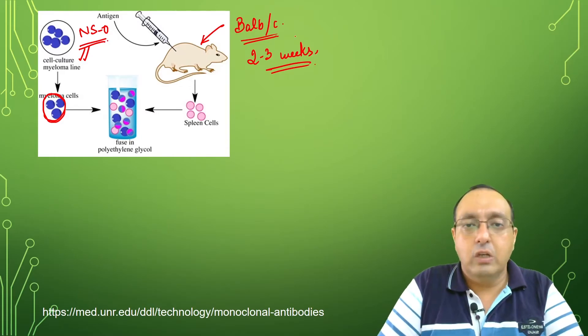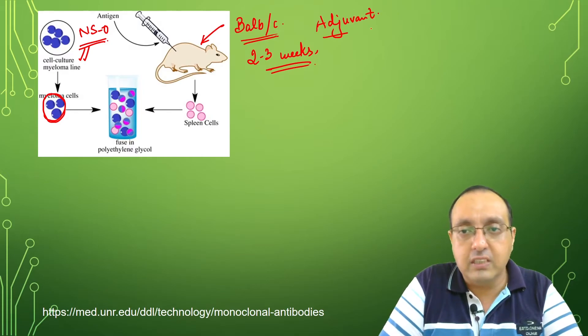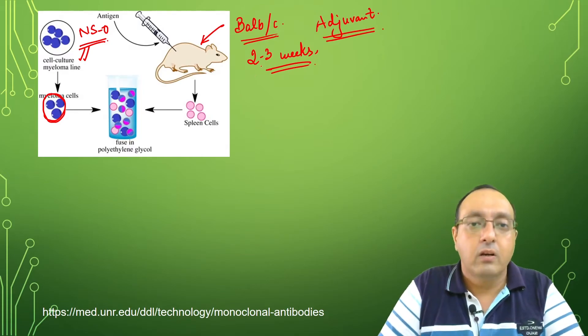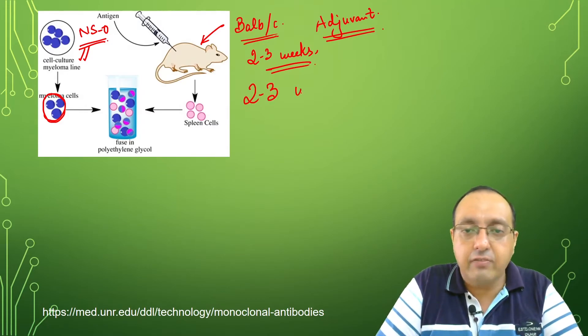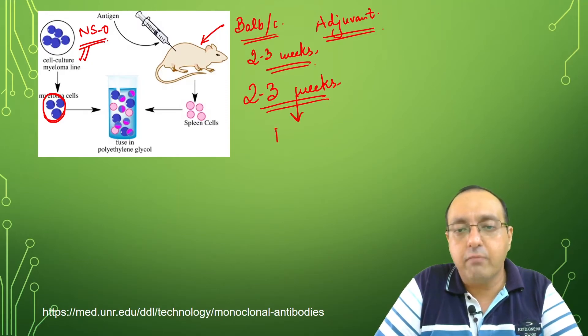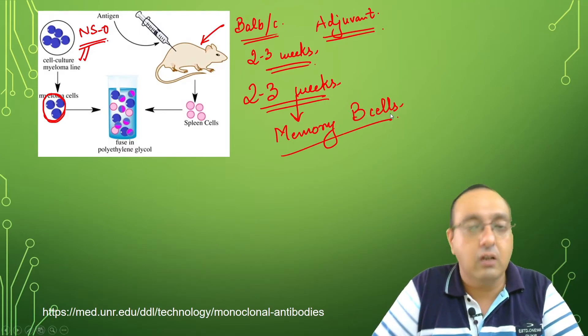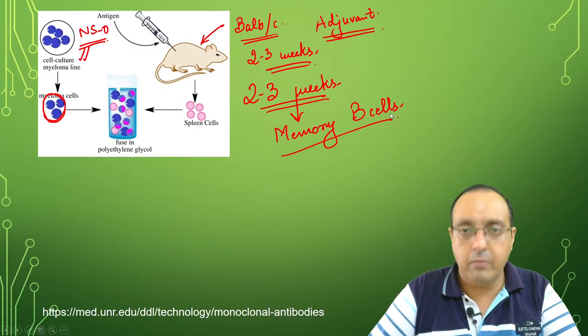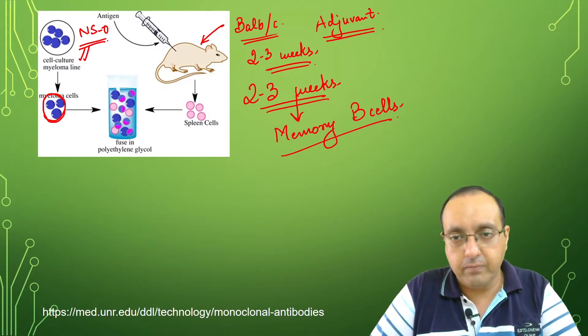We continuously check the serum of that mouse to ensure it's producing antibodies against that antigen. Usually we add adjuvant to our antigen to make sure the immune response is robust. Then we allow a rest period of two to three weeks after immunization so it leads to formation of memory B cells. This rest period is crucial because these quiescent memory B cells are produced during this time. After that, the mice are sacrificed and we isolate their spleen cells.